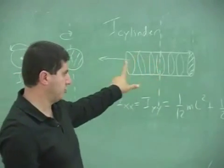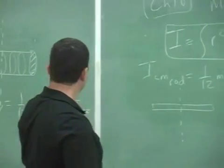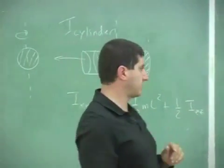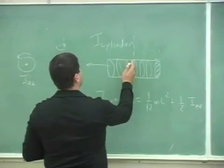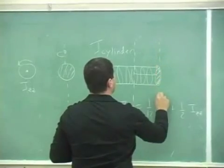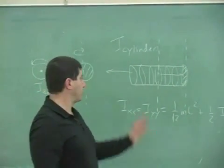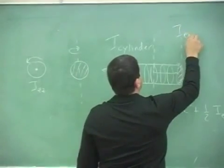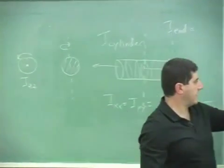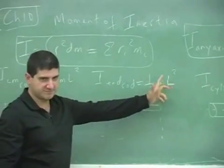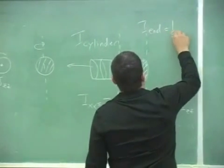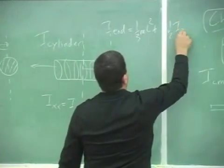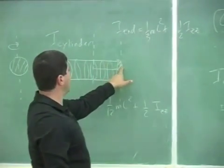That's the formula the book doesn't give you. Then we also learned how to translate any of these to any axis using the parallel axis theorem. For example, if the cylinder is turning around its end — the right axis — then we shift it over by half the length. I of end would look like the I-end of the rod: one-third mL squared, plus you still have half of I-ZZ. That one stays the same. So that's the moment of inertia if the cylinder is rotating around the end point.